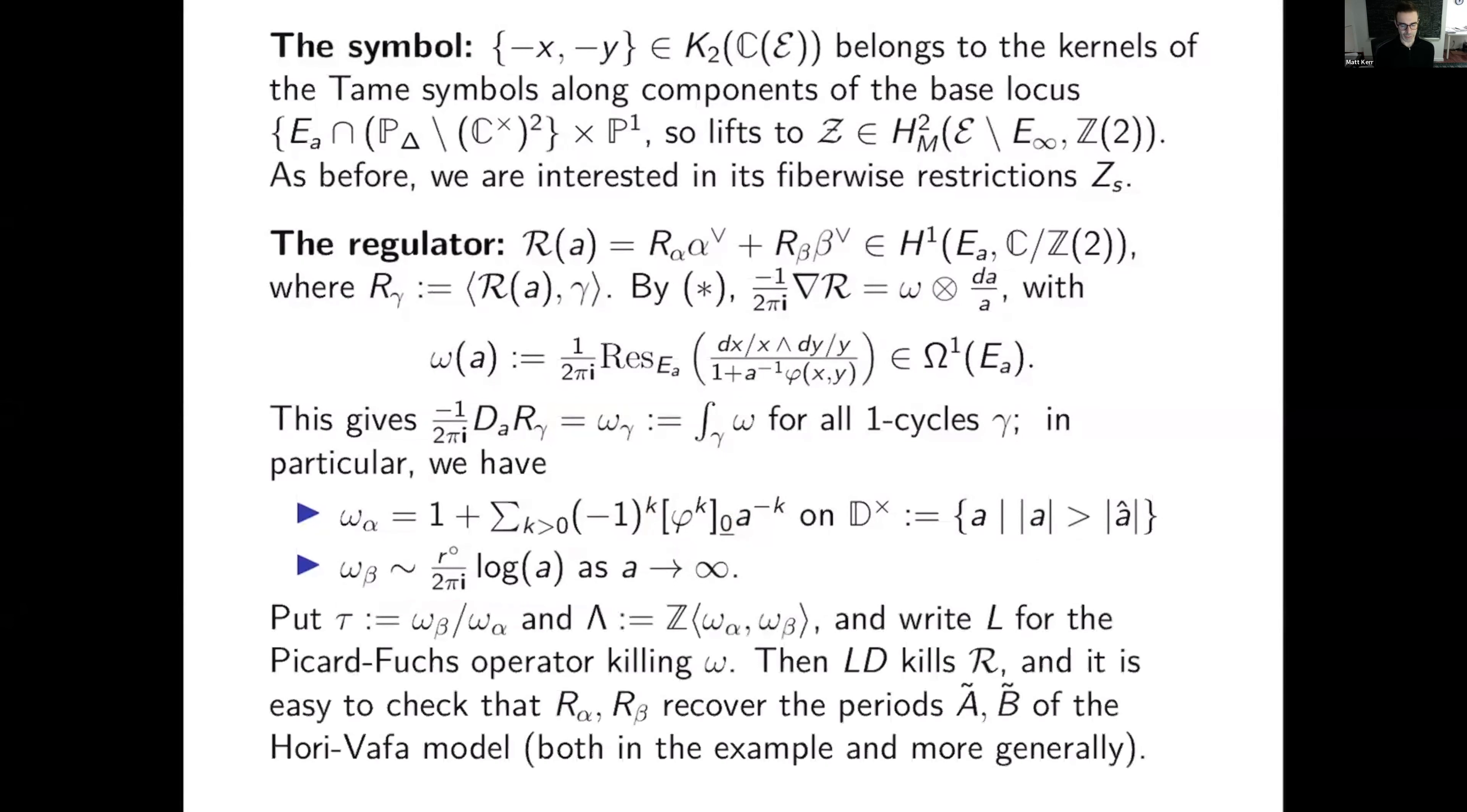I take the period ratio tau and the period lattice lambda and L for the Picard-Fuchs operator killing omega. Then LD kills the regulator class. And in other words, I apply D, then I get the class omega. And then I apply L to omega and I get zero. And it's easy to check that both R alpha and R beta recover our periods A tilde, B tilde of the Hori Vafa model, both in the example that we had and more generally.